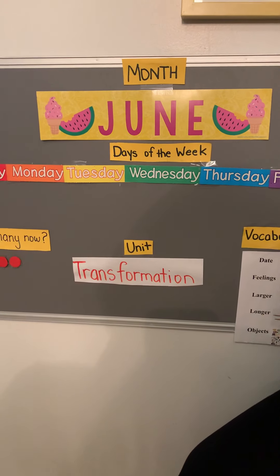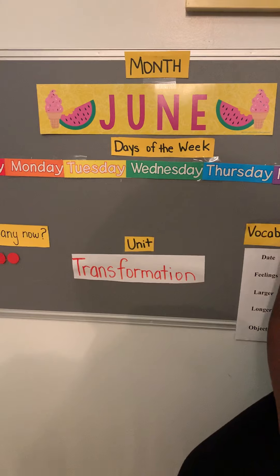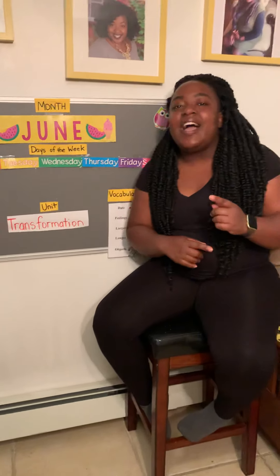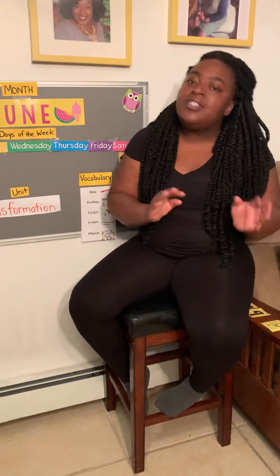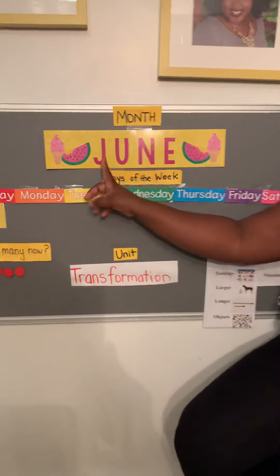Let's see if we can figure out the month we are in. Ready? Here we go: January, February, March, April, May, June, July, and August, September, October, November, then December — there are 12 months in a year. We are in the sixth month, we are in...